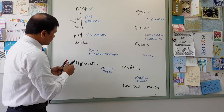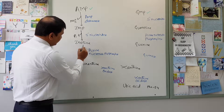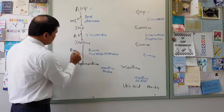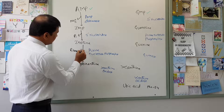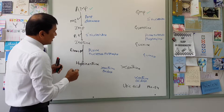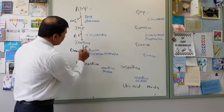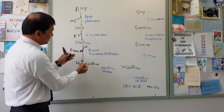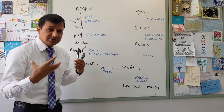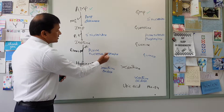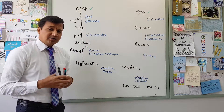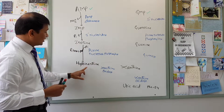Inosine is then converted into hypoxanthine after the release of ribose-1-phosphate. The nucleoside is converted into a free base after removal of the ribose sugar. Inorganic phosphate is incorporated into the reaction and the ribose sugar is removed — that job is done by purine nucleoside phosphorylase, a broad-spectrum general enzyme. That is how inosine is converted into hypoxanthine.